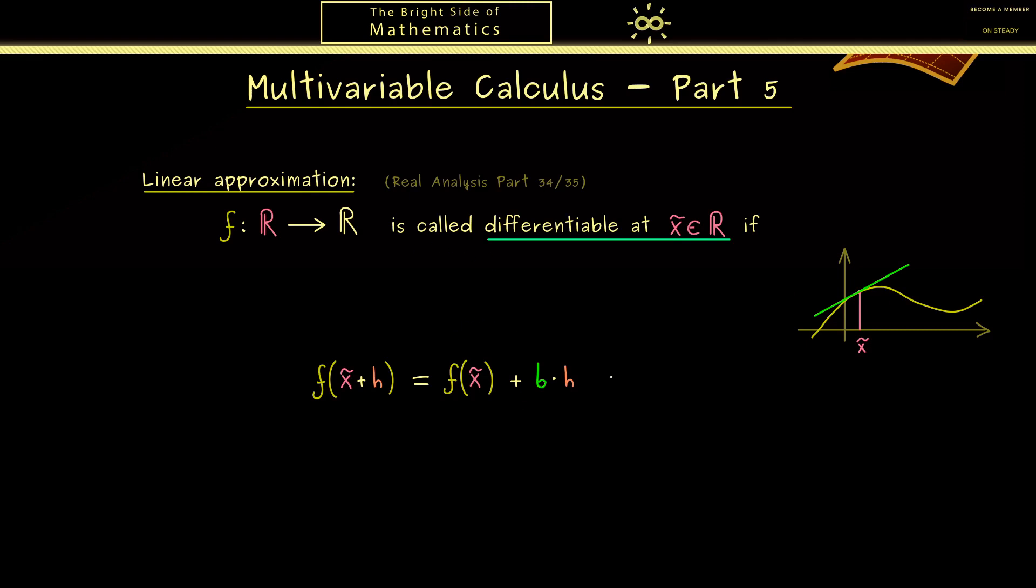And then you should immediately see we don't have the equality here because we just have an approximation. And in order to explain how good this approximation is, we introduce a rest term r of h. And to make it a little bit simpler, we also write r of h times h. And now if the approximation is so good that the rest term goes to 0 when h goes to 0, then we speak of differentiability. Moreover, then you also know this slope b here is what we call the derivative of f at the point x tilde.